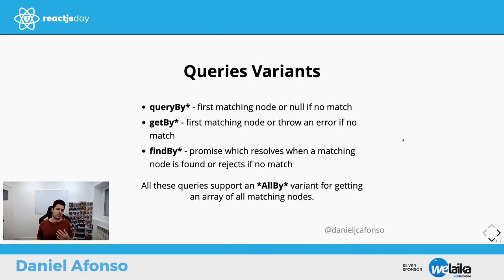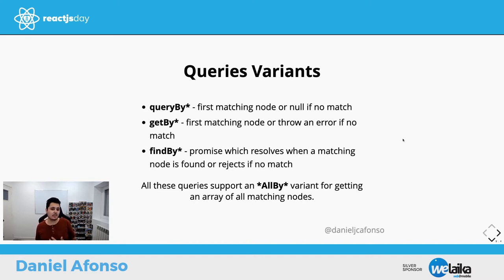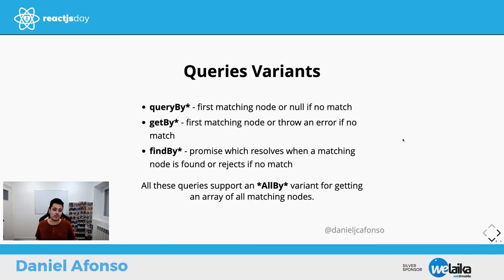Queries are how we search for nodes on the DOM. There are two types: synchronous and asynchronous. QueryBy and GetBy are synchronous — QueryBy returns null if not found, GetBy throws an error. The asynchronous FindBy returns a promise that resolves when a matching node is found or rejects if there's no match. All these variants return only the first matching node; use AllBy variants to get an array of all matching nodes.